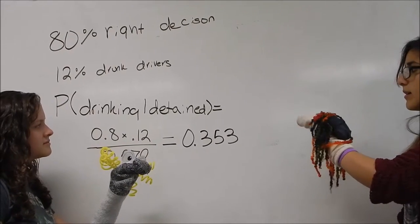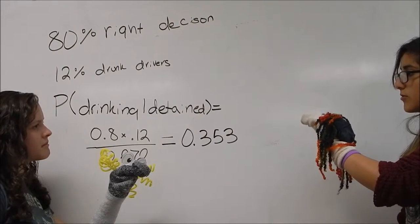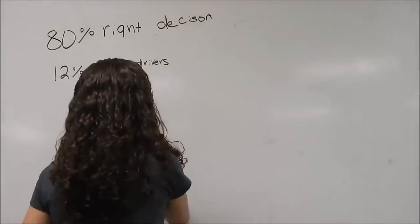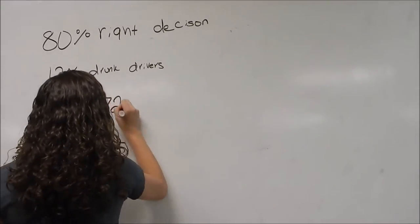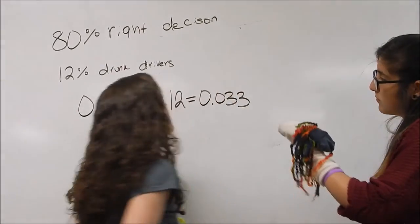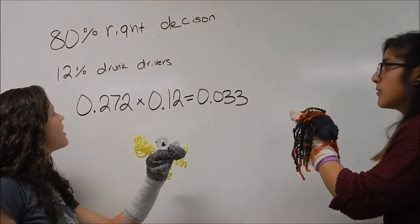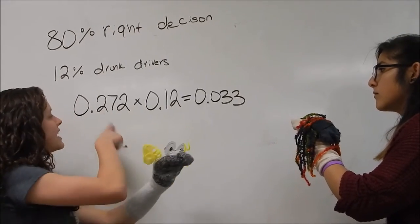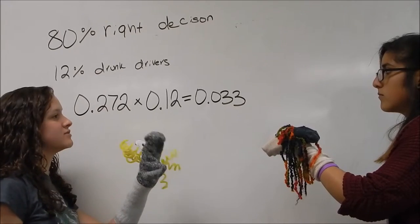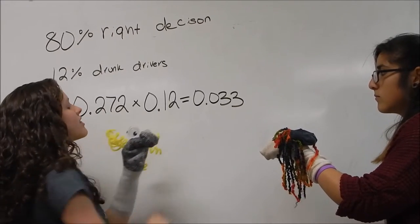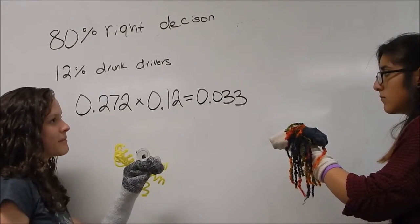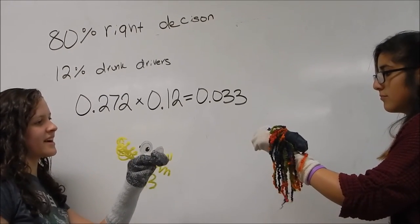So then what's the probability that a drunk driver is released? Good question. So we took the probability that any given driver will be detained. We multiply this by the number of drunk drivers. So the probability that a drunk driver will be released is 3%. That's not a lot. Yeah. So you're pretty safe out there. Nice.